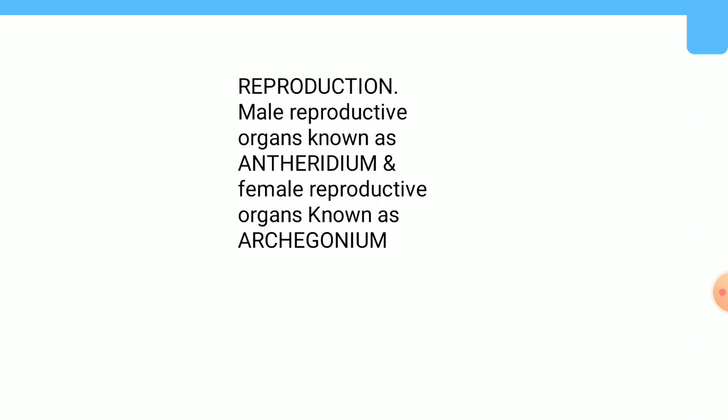Reproduction: The main plant body of the Bryophytes is the gametophyte — the gamete-producing stage. The gametophyte produces male and female sex organs either on the same thallus or on different thalli. The male sex organ is the antheridium and the female sex organ is the archegonium. The antheridium produces biflagellate antherozoids, which are released into water and reach the archegonium.